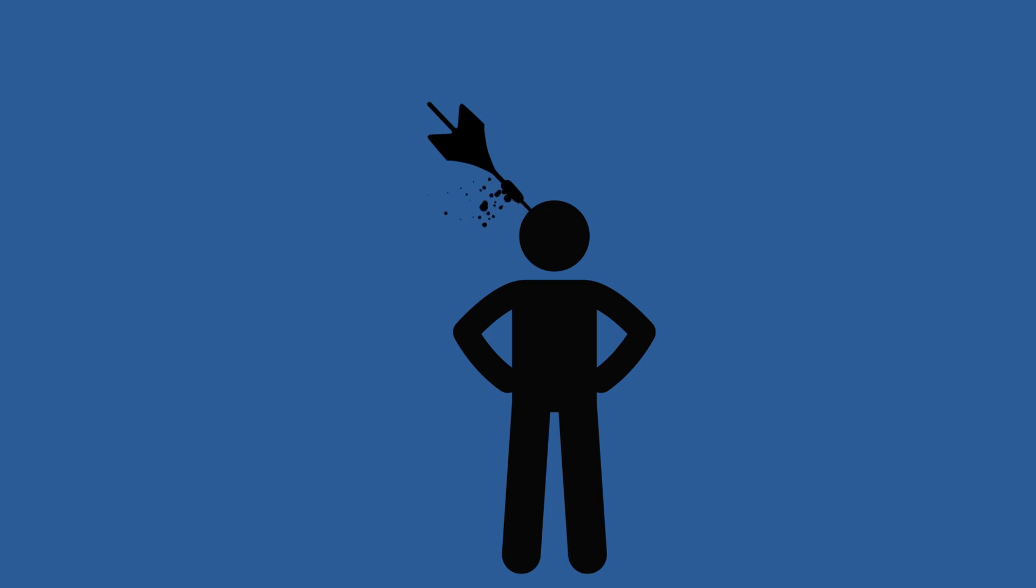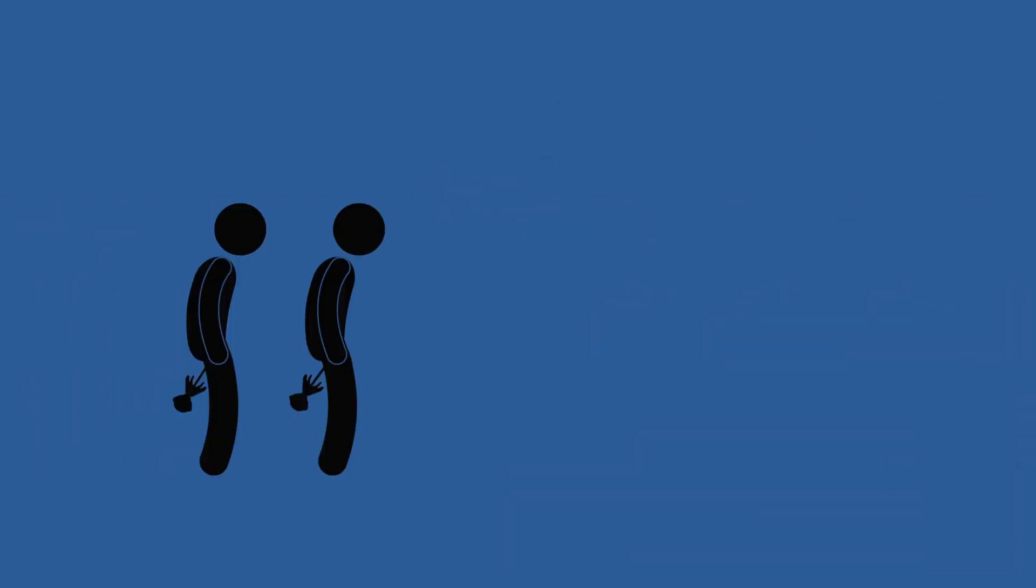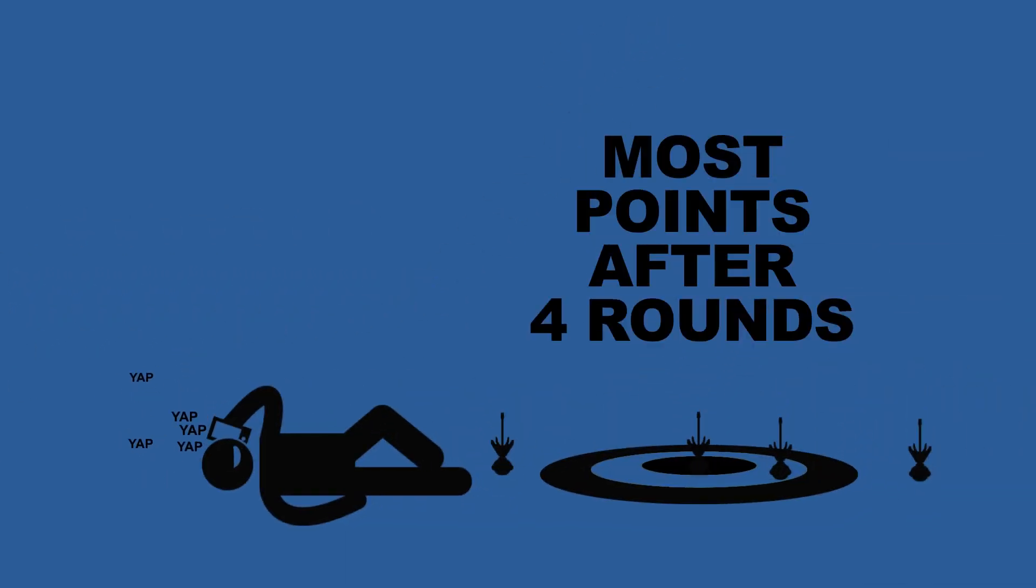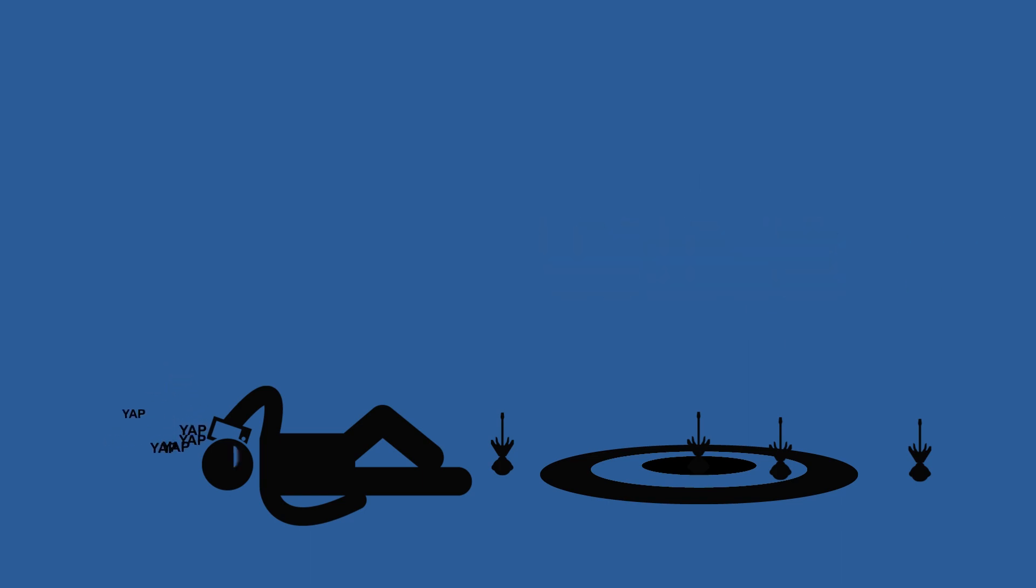Event number three, lawn darts. Well, I wouldn't call them darts. Not like when I was a kid and they were actually darts and people would kill somebody. Safety. Anyhow, there are two players on each team. The darts hit the target and points are scored. The team with the most points after four rounds wins the match.